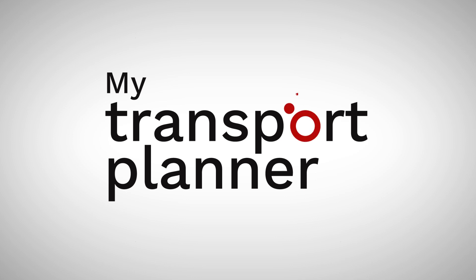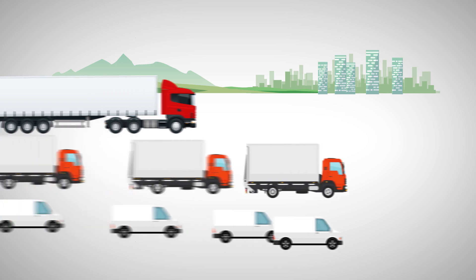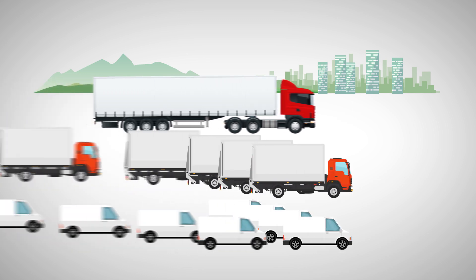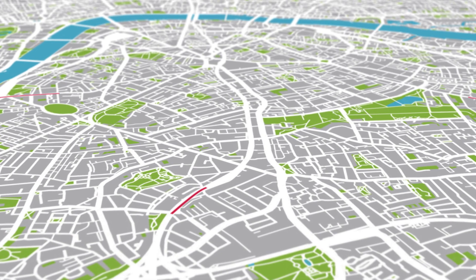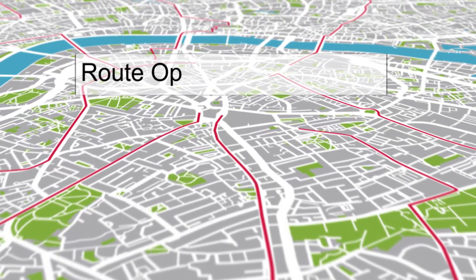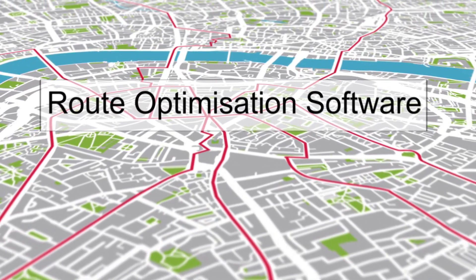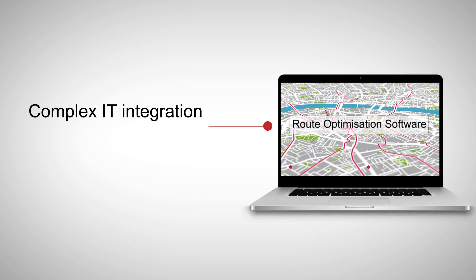My Transport Planner is a revolutionary on-demand transport planning tool designed for commercial vehicle operators of all sizes. For many businesses, route optimization software can be daunting as it requires complex IT integration and a lengthy fixed-term contract.